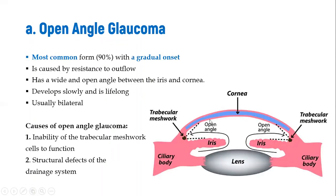In open angle glaucoma, the angle between the iris and the cornea is open and normal. The problem is with the drainage at the trabecular meshwork. This is the most common type, accounting for 90% of cases. It is gradual — hence the name 'silent thief' — normally painless, and usually bilateral. It is caused by resistance to outflow due to inability of the trabecular meshwork cells to function properly, causing blockage or defects in the drainage system.